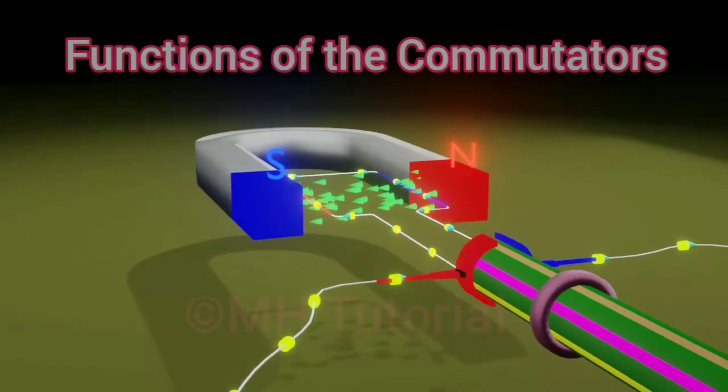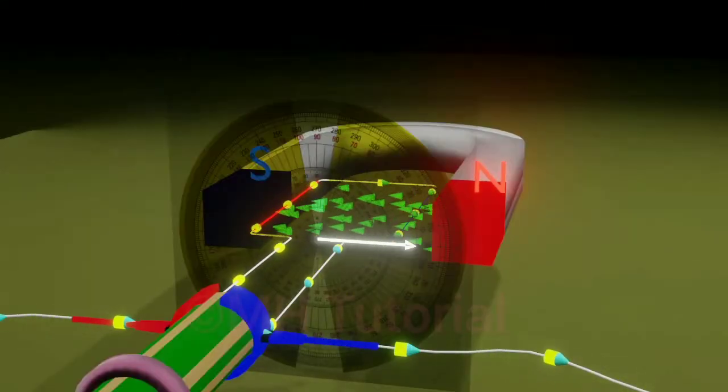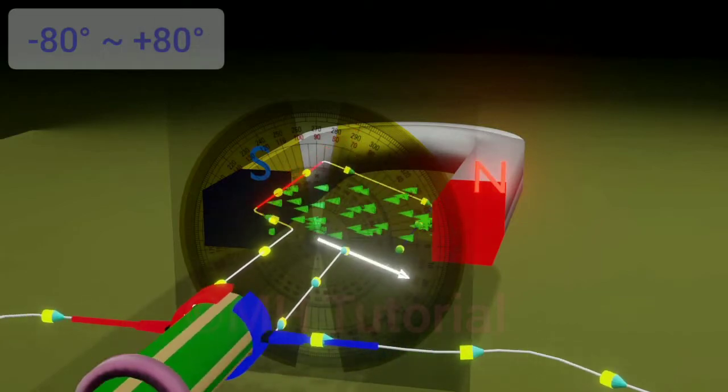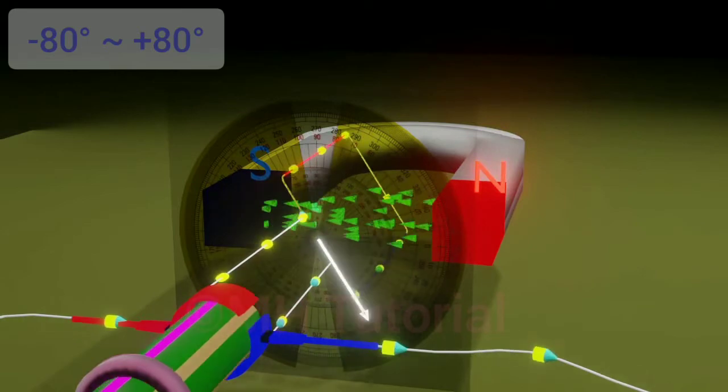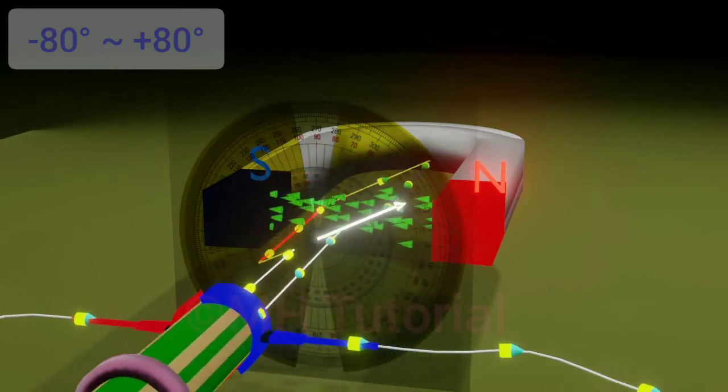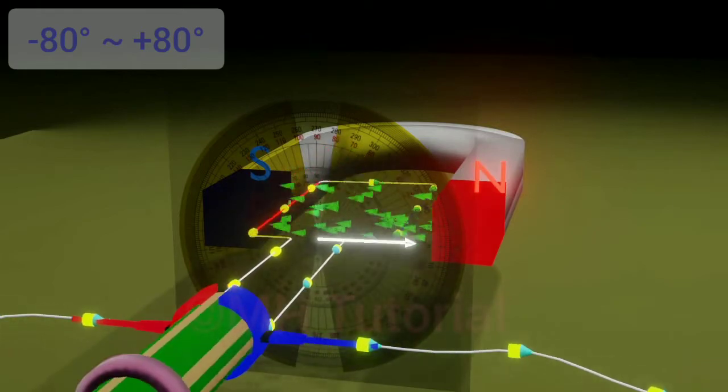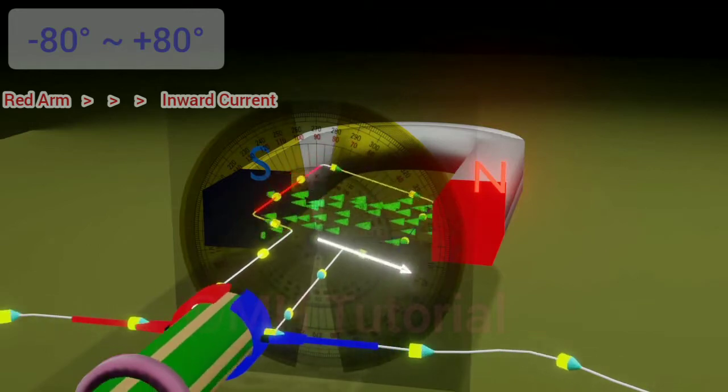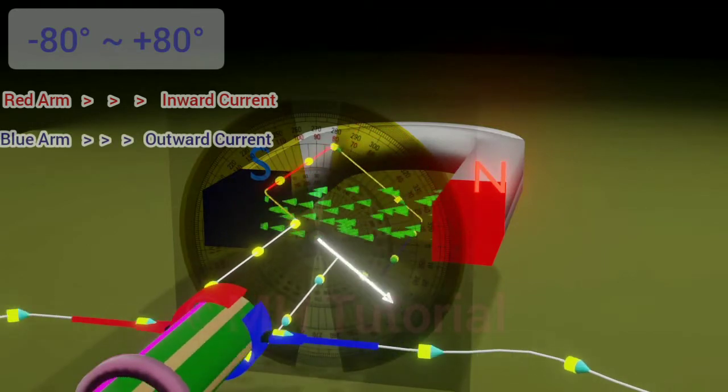Now let's see the functions of the commutators. When the rotating armature lays between angles of 280 degrees (that is minus 80 degrees to 80 degrees), the positive end of the battery comes in contact with the red commutator and the blue commutator is stuck to the negative end of the battery. In this situation, through the red arm near the south pole an electric current will flow inwards, and in the blue arm near the north pole electric current will flow outwards.